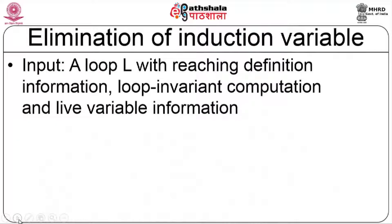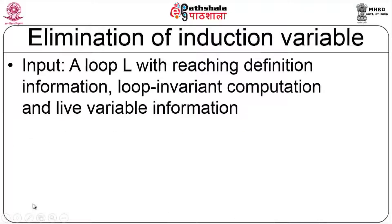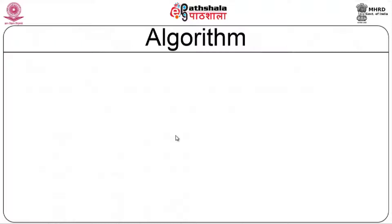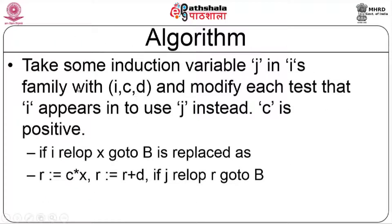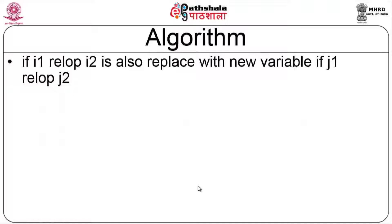After strength reduction, the next step is elimination of induction variables. The algorithm takes a loop L with reaching definitions, loop invariant computation, and live variable information as input. Live variable information is required to know whether i and j are used later. The output is a revised loop.